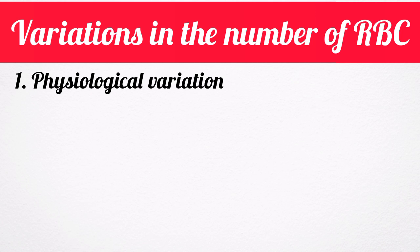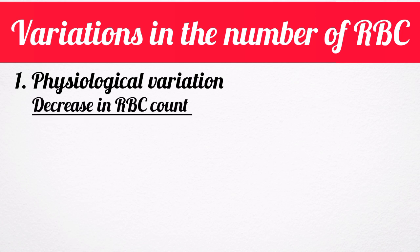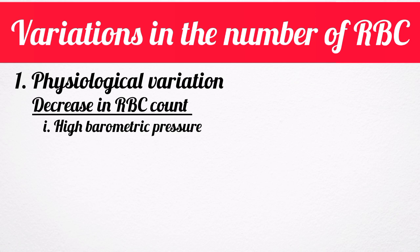Now let's look at the conditions that bring about a decrease in red blood cell count. Decrease in red blood cell count occurs in the following physiological conditions. Number one: at high barometric pressures, as in deep sea, the oxygen tension of blood is higher, and the red blood cell count usually decreases. Number two is during sleep — red blood cell count decreases slightly during sleep and immediately after waking.